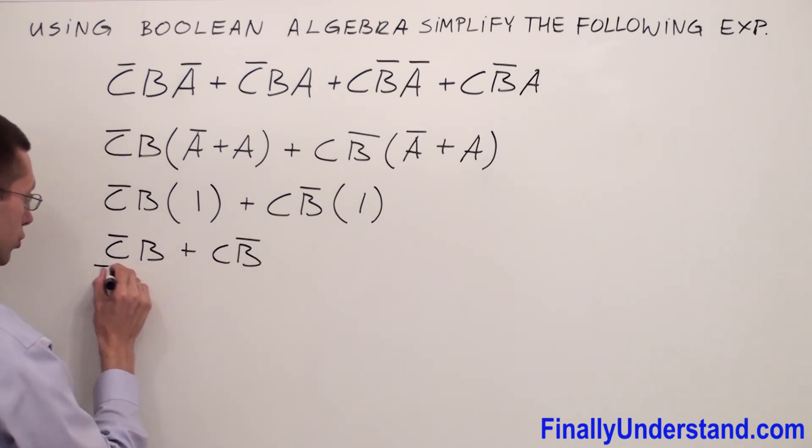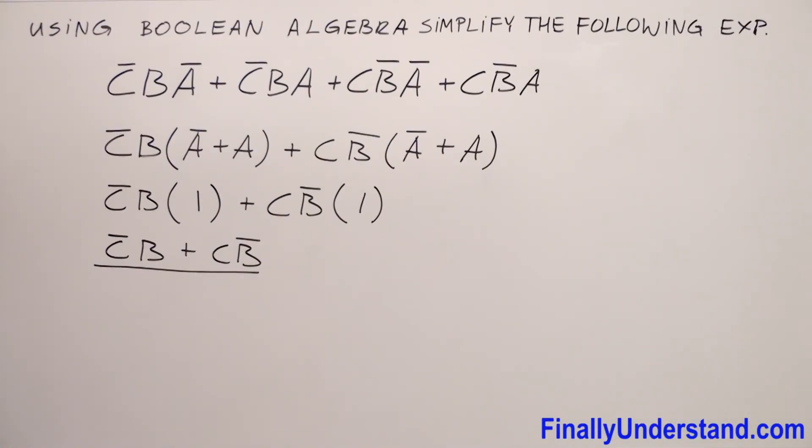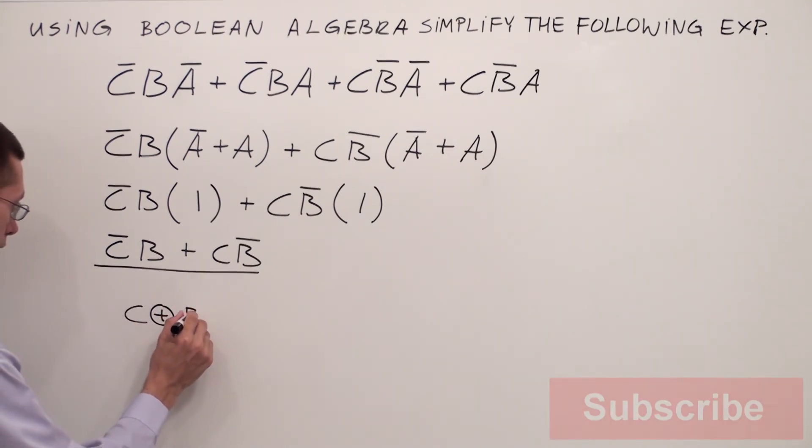This is the solution, but if you want to go further you have to always remember that this form, like CB̄ or C̄B, is going to be equivalent to the exclusive OR gate, which is C exclusive OR B.